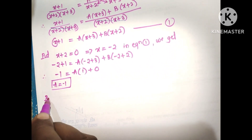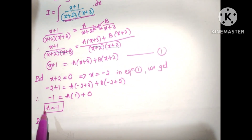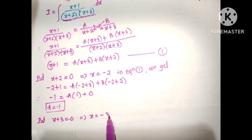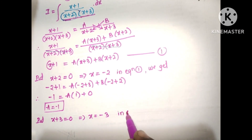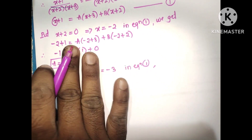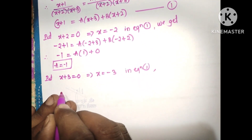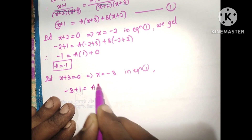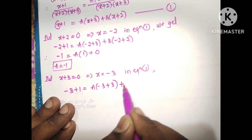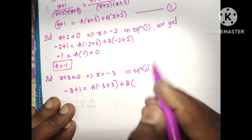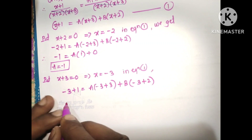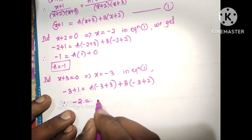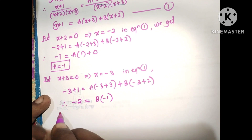Now to find B, put the second linear factor equal to zero: x plus 3 equals 0, so x equals minus 3. Substituting into equation number 1: minus 3 plus 1 equals A of minus 3 plus 3 plus B of minus 3 plus 2, which gives minus 2 equals 0 plus B of minus 1. Therefore B equals 2.